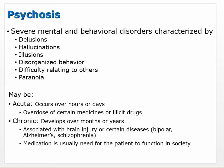So psychosis is a set of behaviors — severe mental and behavioral disorders characterized by delusions, hallucinations, and illusions. Delusions tend to be more in the brain; there's often a story associated with them that tries to make it fit. Illusions can be sensory, more visual. Hallucinations can be auditory or visual. Disorganized behavior, difficulty relating to others, and paranoia are also associated with this.